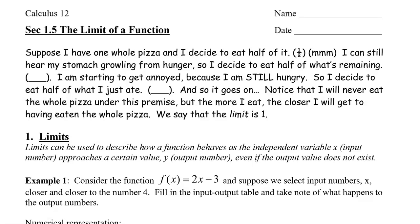Suppose I have one whole pizza and I decide to eat half of it. I can still hear my stomach growling from hunger, so I decide to eat half of what's remaining — half of a half would be a quarter. I'm getting annoyed because I'm still hungry, so I eat half of what I just ate, so half of a fourth would be one-eighth. And so it goes on. Notice that I will never eat the whole pizza under this premise, but the more I eat, the closer I will get to having eaten the whole pizza. So we say that the limit is one.